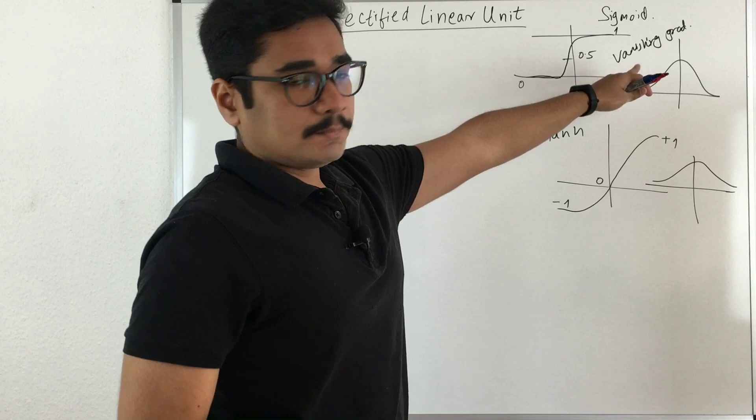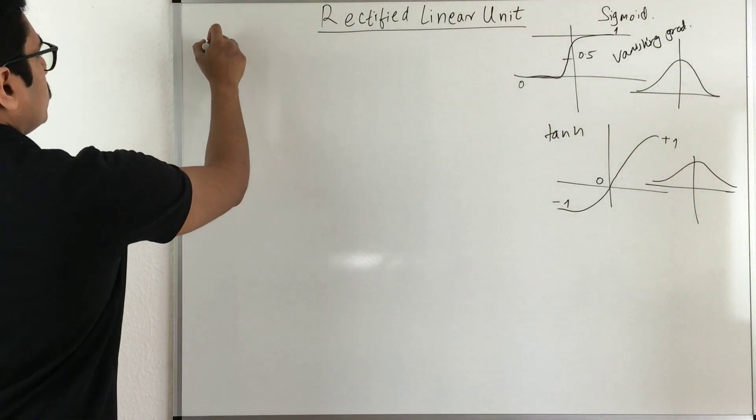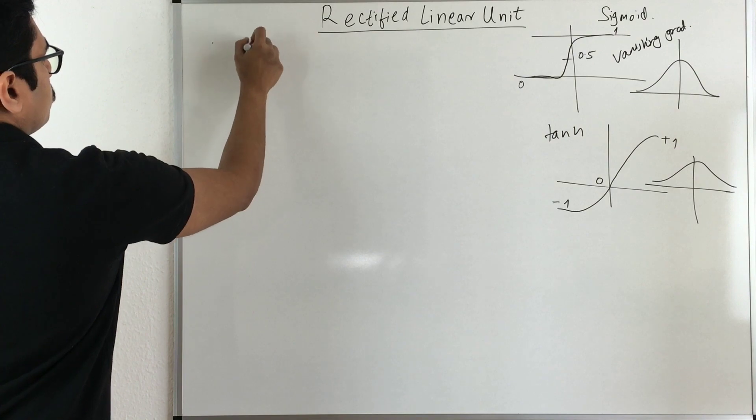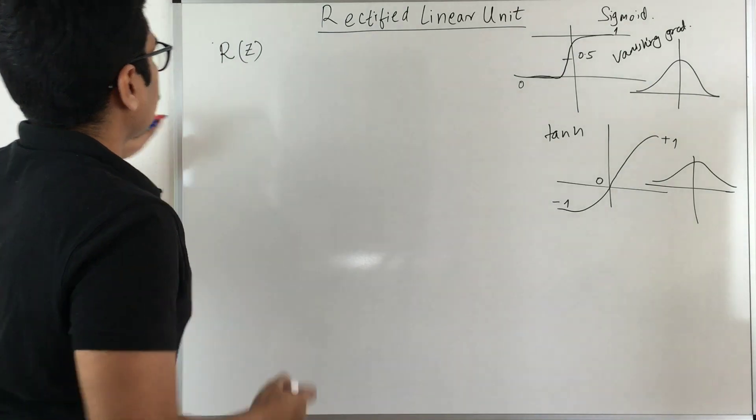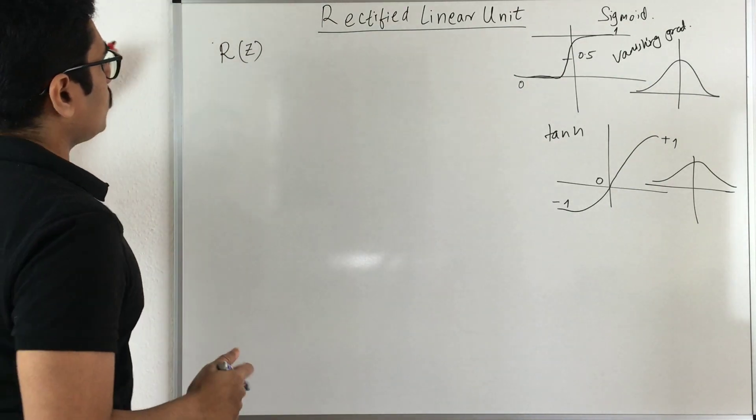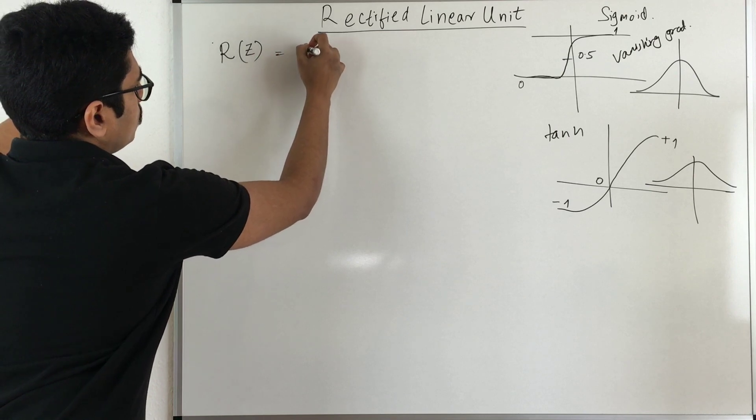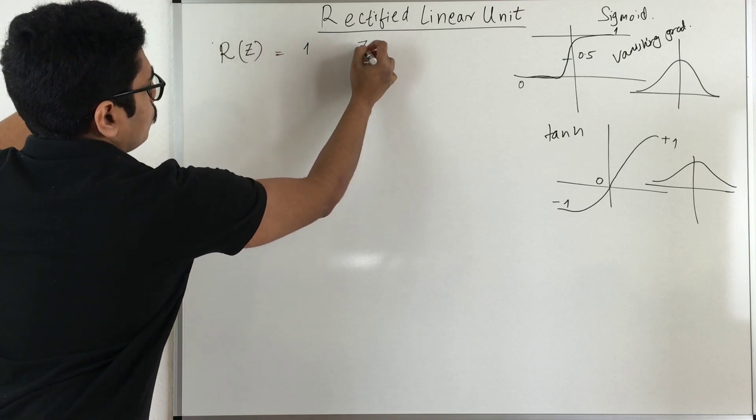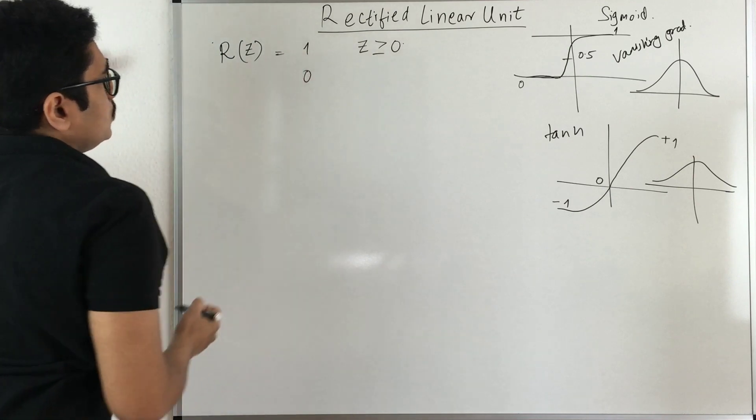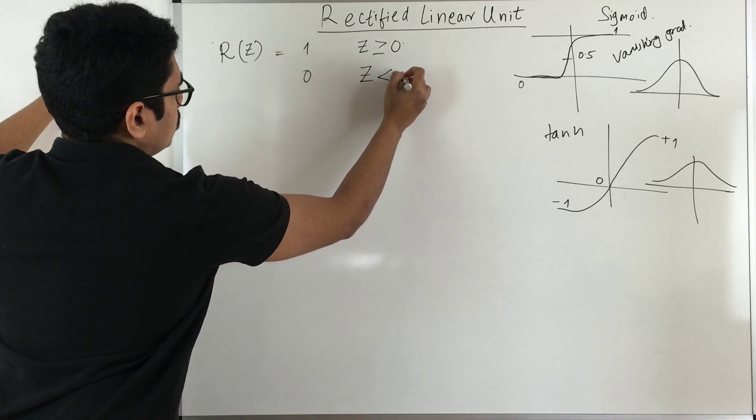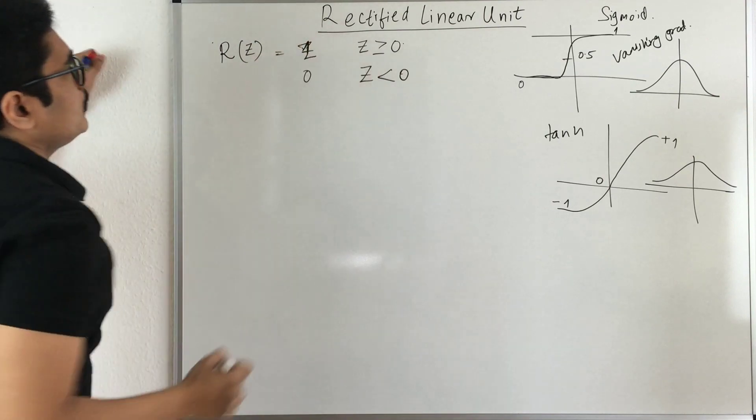So in most of the recent times we mainly use this ReLU function which will not fall into the problem of vanishing gradient. So it is very simple. Let's say we are putting the activation function on some output say z and we have this R which stands for ReLU. So what it says is that this function value is 1 if the value for z is greater than or equal to 0, and it is 0 for z less than 0.